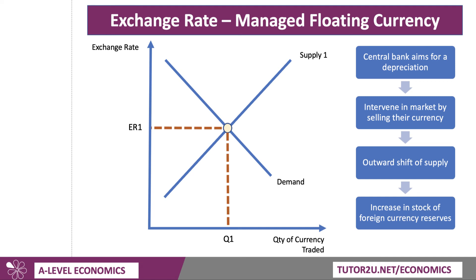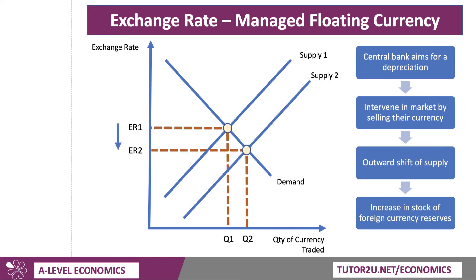Selling yen causes an outward shift of supply, which in theory brings down the exchange rate. It also leads to an increase in the stock of foreign currency reserves, because they're buying dollars and euros. There's our diagram showing how a central bank might sell currency to try to bring about a depreciation.